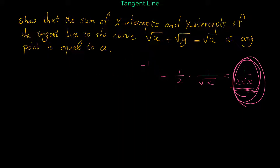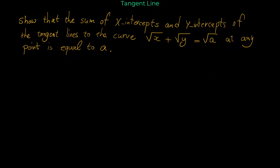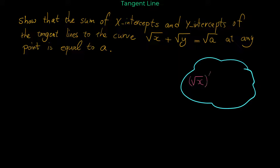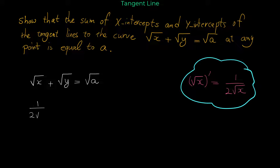Now that we know the derivative of radical x, let us start differentiating the implicit relation. We have this relation between x and y: square root of x plus square root of y equals square root of a. The derivative of radical x is one over two radical x. The derivative of radical y is one over two radical y, but because y is a function of x, don't forget to multiply by y-prime.